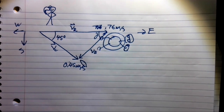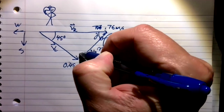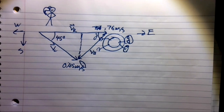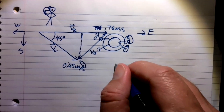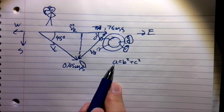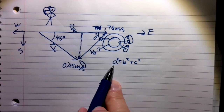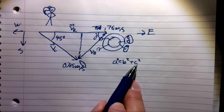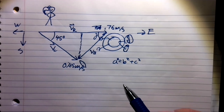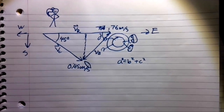Now, we do have a triangle here, but it is not a right triangle. And the Pythagorean theorem only works on right triangles. If we had a right triangle, we could use the Pythagorean theorem — a squared equals b squared plus c squared. But this is not a right triangle. So in order to do this, we're going to have to go way back to trig. Get out your trig books, dust it off. We have to use the law of cosines.